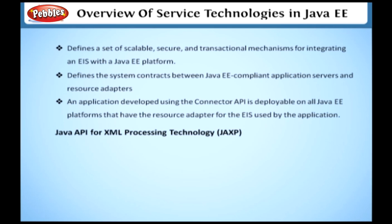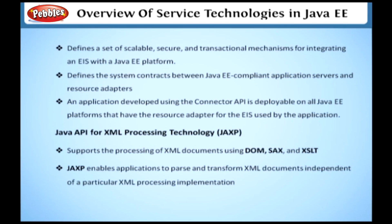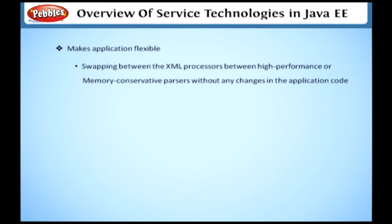Java API for XML Processing Technology — JAXP. This technology supports the processing of XML documents using DOM, SAX, and XSLT. JAXP enables applications to parse and transform XML documents independent of a particular XML processing implementation. We can also make our own application flexible by swapping between XML processors, such as between high-performance or memory-conservative parsers, without changing anything in the application code.